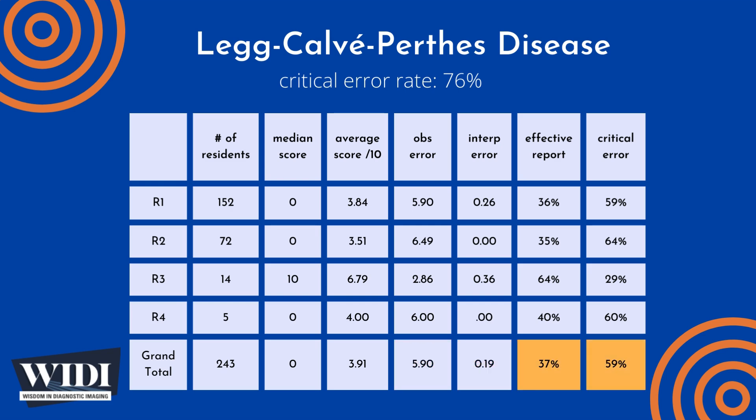We define an effective report to be one which achieves scores between 7 and 10 — in terms of letter grades, an A or a B. In this most missed case, 37% of residents produced effective reports. We define a report having a critical error to be one with scores between 0 and 2 — in terms of letter grades, an F or a D. In this most missed case, 59% of residents produced reports with critical errors.